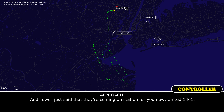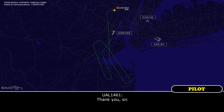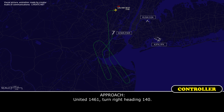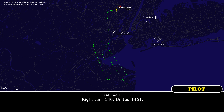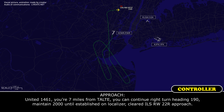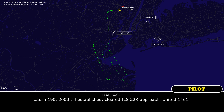Tower, just got that coming on station now for you, United 1461. Yes sir. United 1461, turn right heading 140. Right turn 140, United 1461. United 1461, you're 7 miles from Talti, continue right turn heading 190, maintain 2,000 to establish the localizer, cleared ILS runway 22 right approach. Turn 190, 2,000, established, cleared ILS 22 right approach, United 1461.